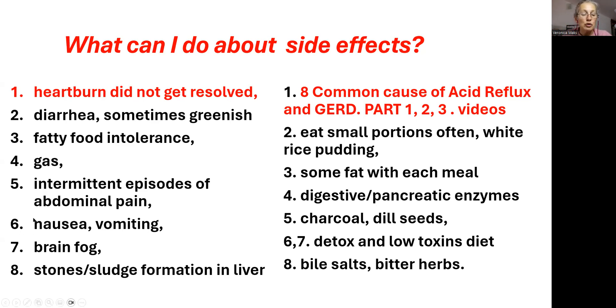Number six and seven, I want to bunch into one category: nausea, vomiting, and brain fog. People often complain that they cannot concentrate. It's all systemic complaints because liver does detox. And often chemicals become more toxic after detox. They get absorbed back into the bloodstream and have an effect on the brain.